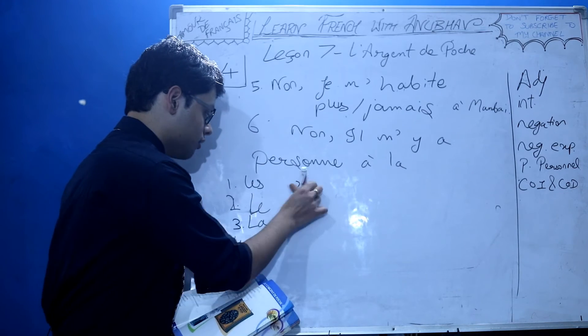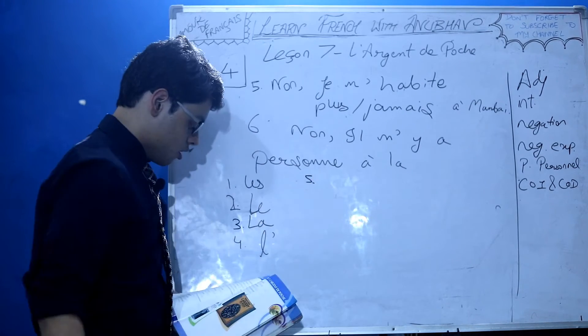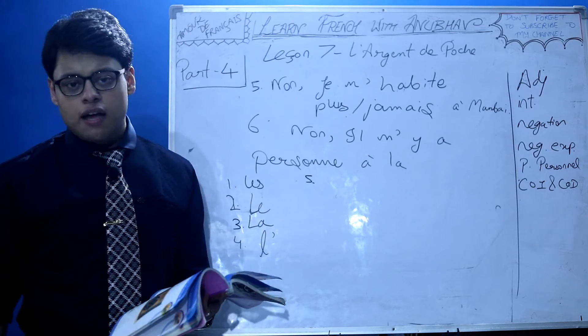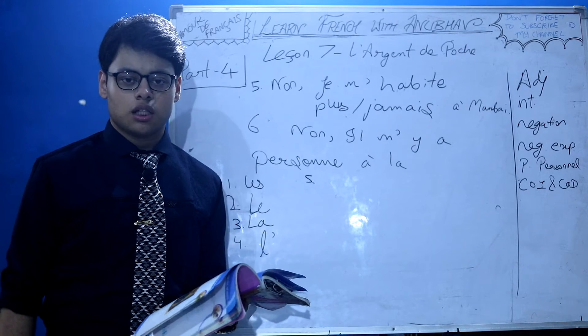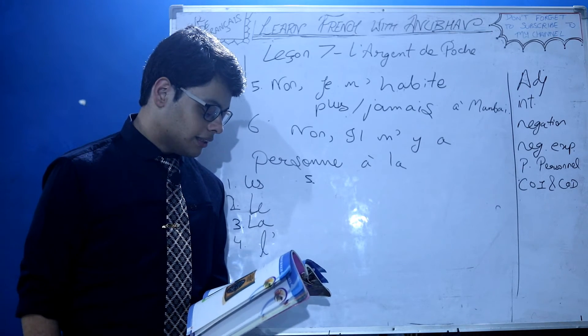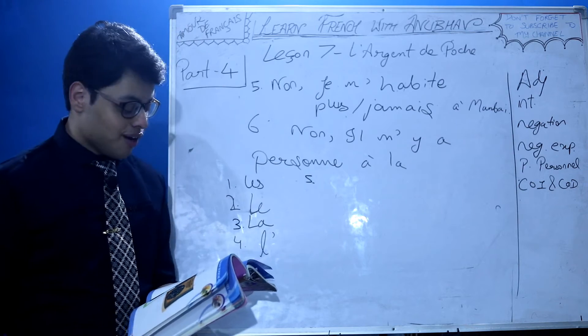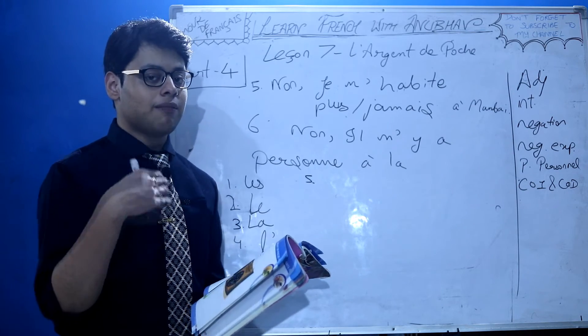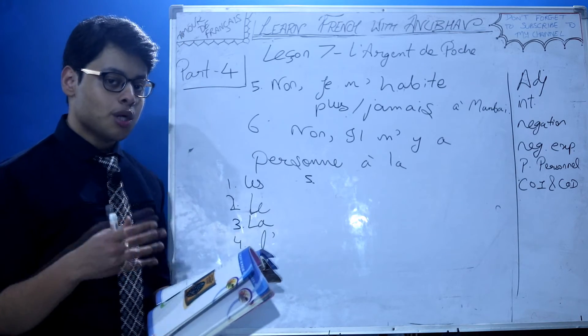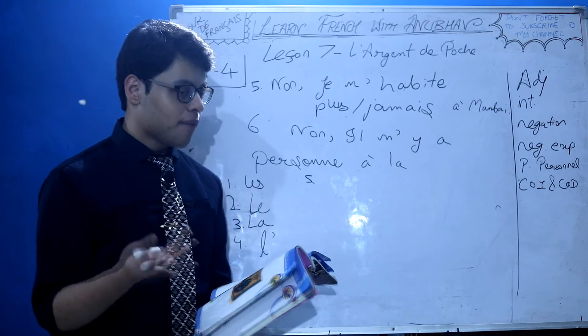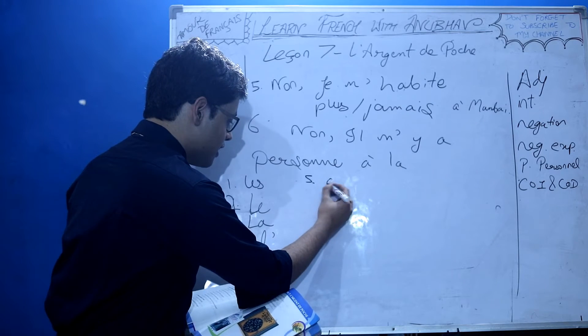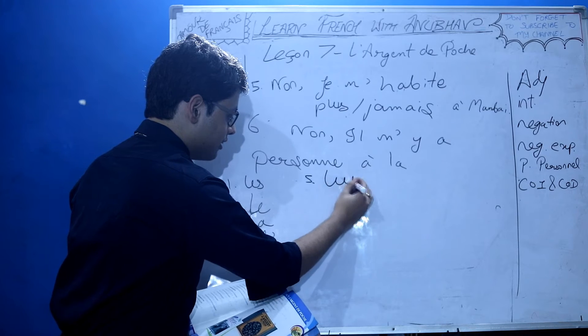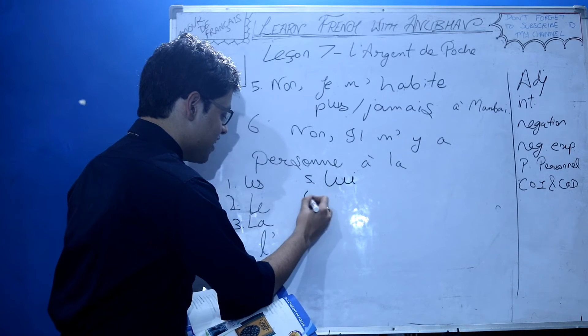Sixth: Quand il faut téléphoner au dentiste. When it needs to telephone to the dentist, c'est moi qui lui téléphone. Au dentiste - au means à. À is a preposition, so it's COI. Here we use lui.